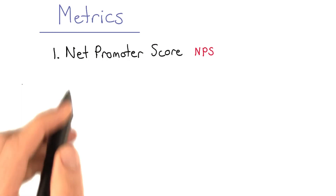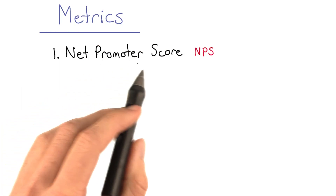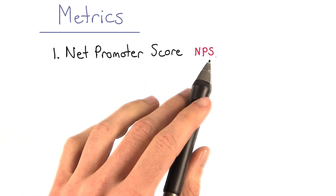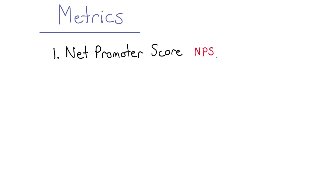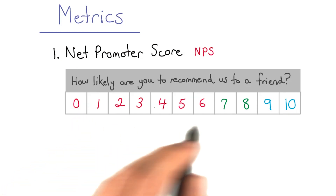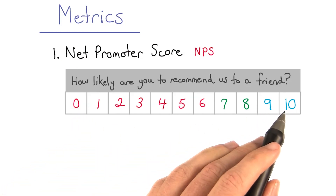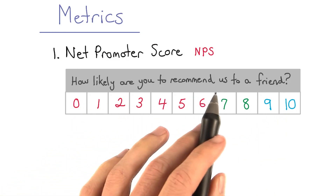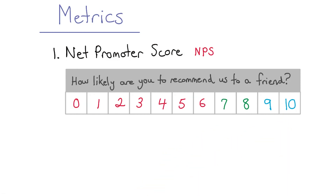The first metric of interest is Net Promoter Score, or NPS. NPS is a customer loyalty metric that is determined by asking users one question: on a scale of 0 to 10, how likely are you to recommend this product or service to a friend?